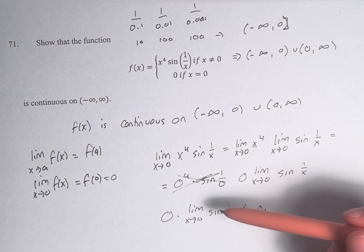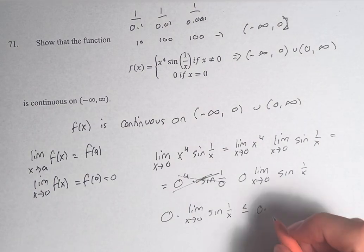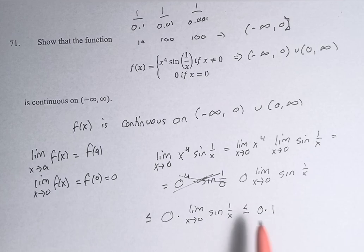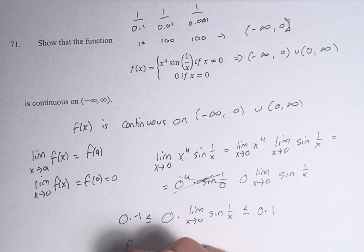Right, because the largest value for any value that we're inputting into sine, the biggest thing that can come out of it is 1. So we have 0 times 1. And it's greater than or equal to the lowest value that this can have, which is, again, negative 1. 0 times negative 1 is 0.